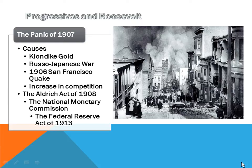The National Monetary Commission's proposal would eventually be enacted in the Federal Reserve Act of 1913. The Aldrich Act also allowed banks to circulate their own money for six years. At the time, gold was the only acceptable legal tender and there were no paper dollars. This changed with the Aldrich Act, though that money was only as good as the bank issuing it.